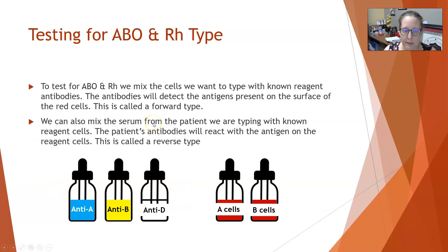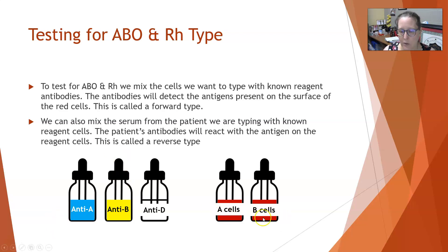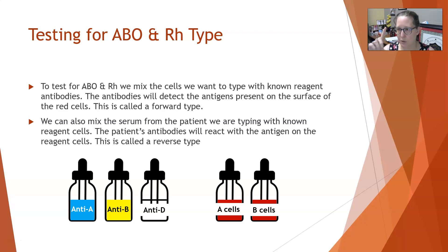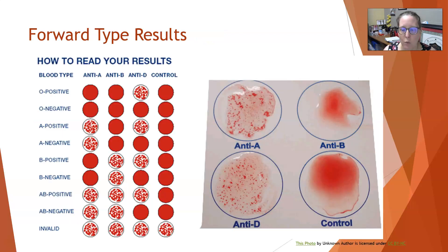We can also mix the serum from the patient with known reagent cells — this is called a back type or reverse type. The patient serum contains their antibodies; if the patient is type A, they'll have anti-B antibodies. We can take that serum and react it against A cells or B cells — it wouldn't react with A cells but would react with B cells. This serves as a check that the forward type was correct. However, back typing requires a blood tube with plenty of serum; if you only have a finger-prick drop of blood, you can only do the forward type.